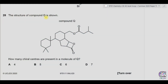Question 28. The structure of compound Q is shown. How many chiral centers are present in the molecule of Q? For a chiral carbon, the carbon must be bonded to four different groups. For a carbon atom to be chiral, there must be no more than one hydrogen atom present and there should be no double bond on that carbon.